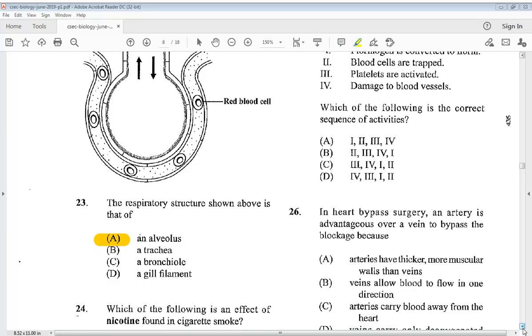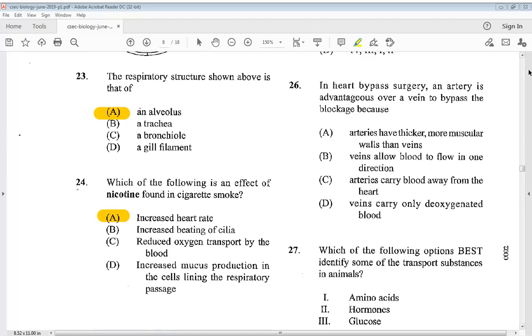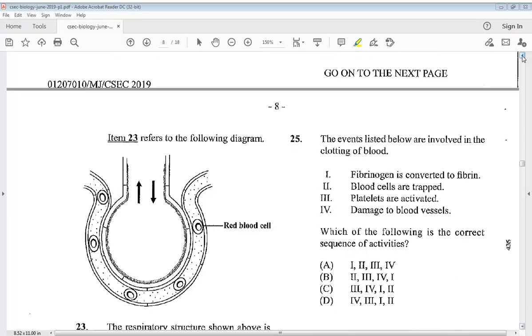Question twenty-four: which of the following is an effect of nicotine found in cigarette smoke? A, increased heart rate. We need not go any further, that is our answer. Question twenty-five: the events listed below are involved in the clotting of blood. One, fibrinogen is converted to fibrin. Two, blood cells are trapped. Three, platelets are activated. Four, damage to blood vessels. Which is the correct sequence? We know it is damage to blood vessels, then platelets are activated, then fibrinogen is converted to fibrin, and finally blood cells are trapped. D would be your answer.